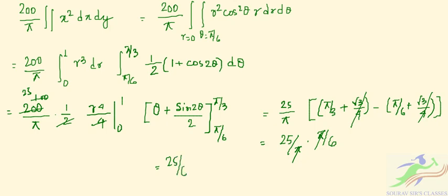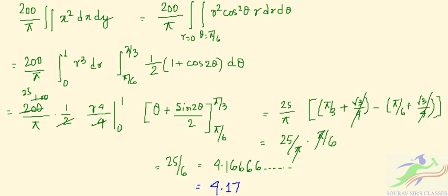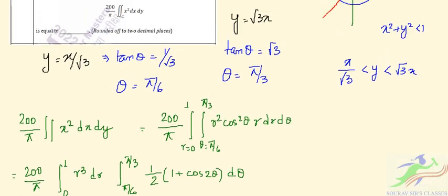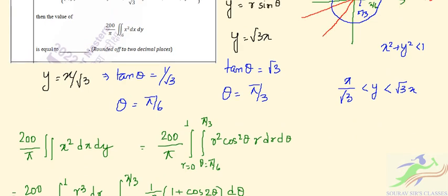After simplification, we get (200/π) × (1/4) × (π/12 + √3/8), which gives 25/π × (π/6) = 25/6 × ... ultimately yielding 25π/6. In decimal terms this is approximately 4.17. So the answer to question 52 is 25/6 ≈ 4.17.